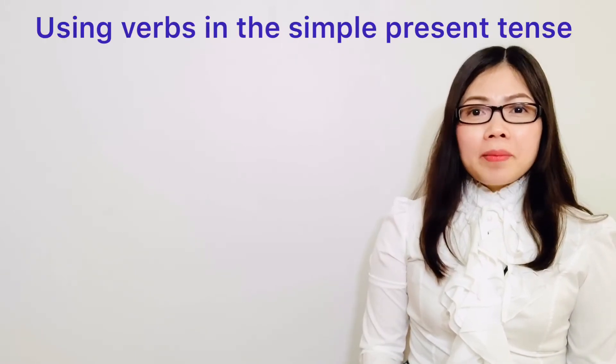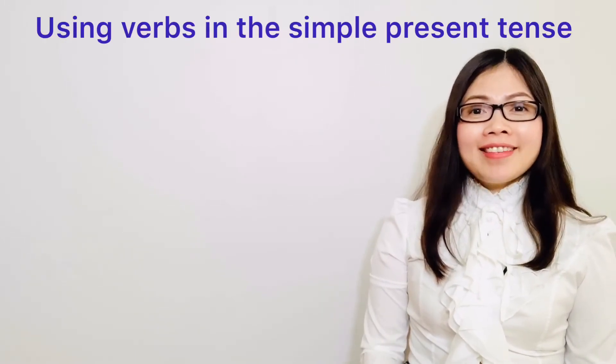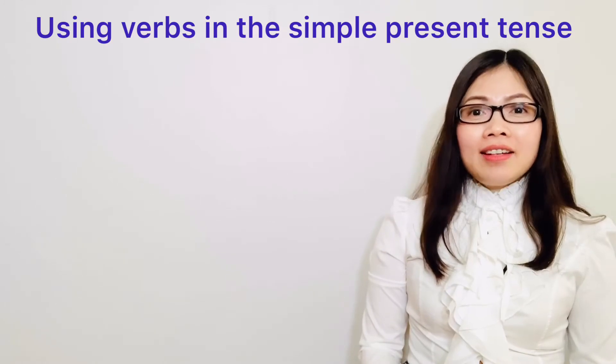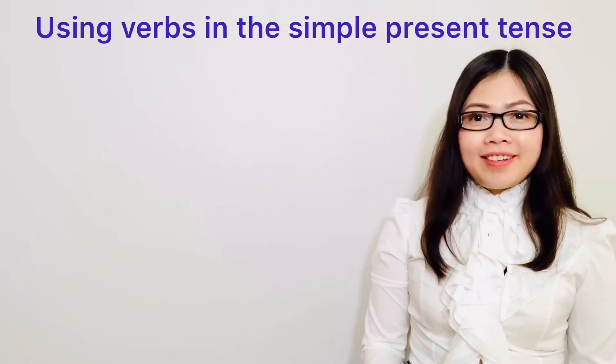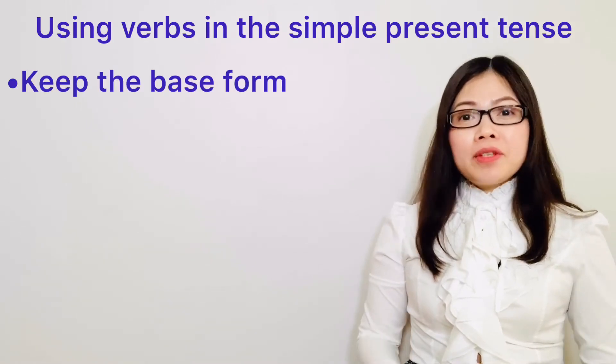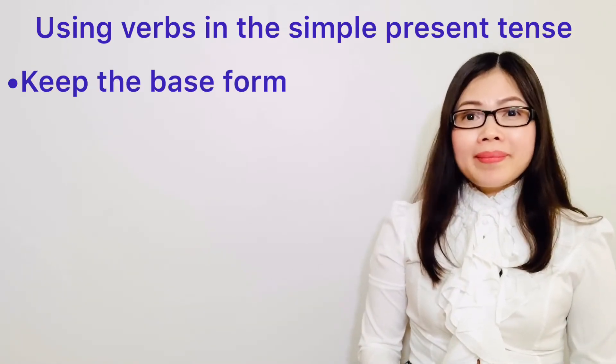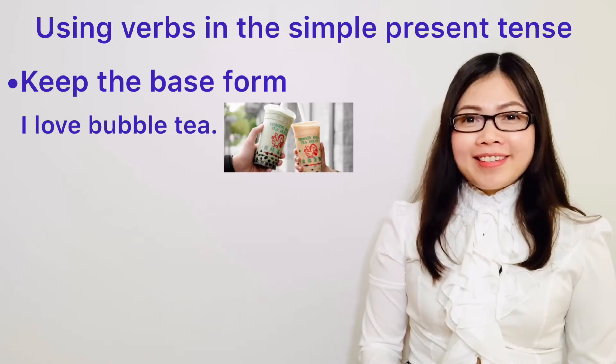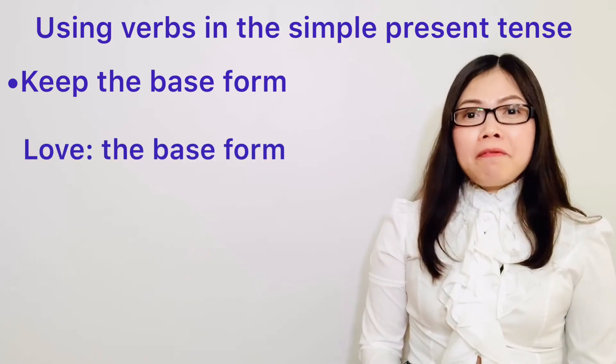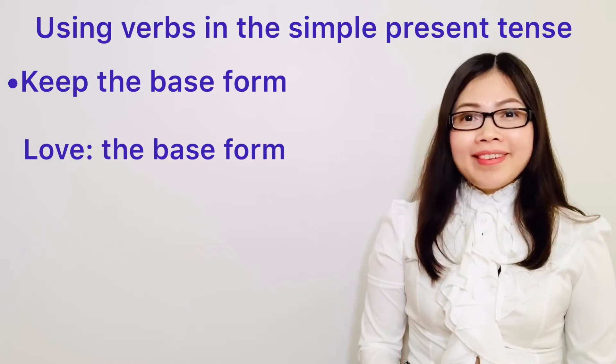So, remember when using the verbs in the simple present tense, you cannot add ED or ING after, but you have to keep the base form. For example, I love bubble tea. So, love is the base form.